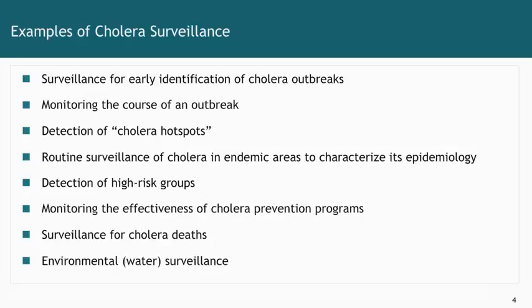There are additional reasons for carrying out cholera surveillance. After an outbreak has already started, it's important to monitor the course of the outbreak so that you know the pace and whether it's increasing or decreasing, or at the end, to document that the outbreak is over. When we see outbreaks, oftentimes there are cholera hotspots where most of the cases are occurring, so it's important to understand where those hotspots are. Many countries have cholera in an endemic manner, and for those countries it's important to characterize the epidemiology, which requires a good surveillance system.